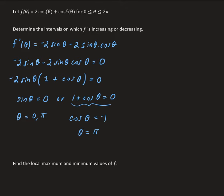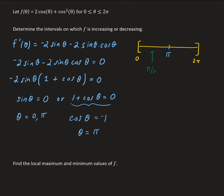We plot these critical numbers on the number line going between 0 and 2π, with π in the middle. We choose test points: π/2 between 0 and π, and 3π/2 between π and 2π. The values in green are our test points that we'll evaluate back into the first derivative.